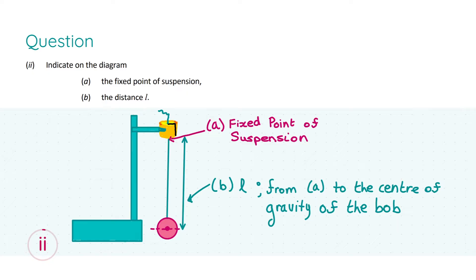Now moving on to part two, we are to indicate on the diagram the fixed point of suspension for part a, and label the distance l for part b. Here I've just copied the diagram from part one without all of the labels to make it as clear as possible. But in the exam I would just indicate on the same diagram that you drew before. Just be really clear and make sure everything is neat and tidy so the examiner can see that you understand the task and there's no ambiguity as to your knowledge.